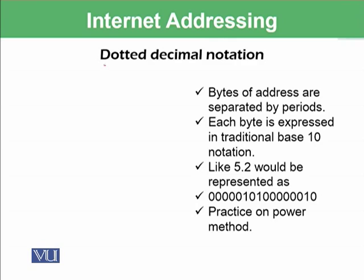To represent IP addresses, we use dotted decimal notation. For example, if there is an IP address like 5.2.3.4, we will represent each number in eight bits. Using the power method learned in previous modules, 5 can be represented as 00000101, and 2 can be represented using eight bits as well.